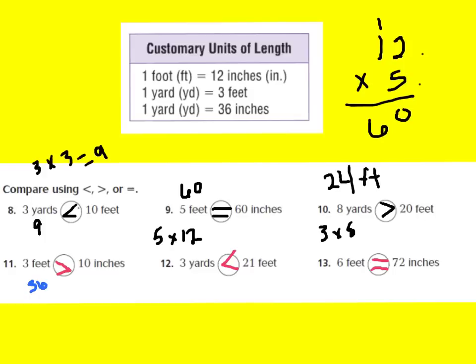Number 12: 3 yards is less than 21 feet, because in 1 yard there are 3 feet, so 3 times 3 gives me 9 feet in 3 yards. Since 9 feet is less than 21 feet, 3 yards is less than 21 feet. Number 13: 6 feet is equal to 72 inches, because 6 times 12 equals 72.